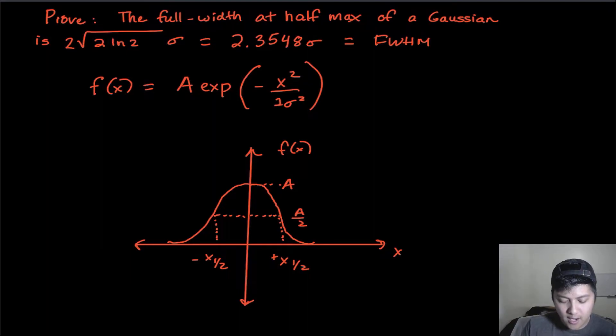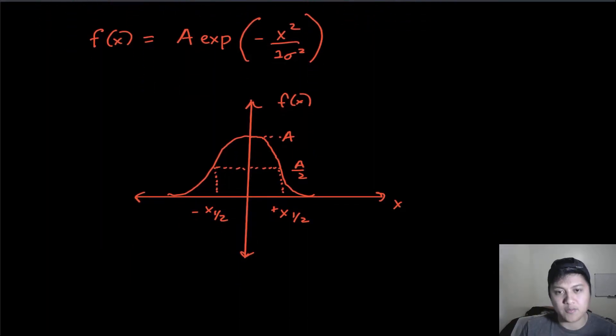And I've written out a simple Gaussian function f(x) on this line here, and the maximum or amplitude value of the Gaussian is A, and the standard deviation is sigma. And we're just going to conveniently center this at the origin, or have it peak at the origin,